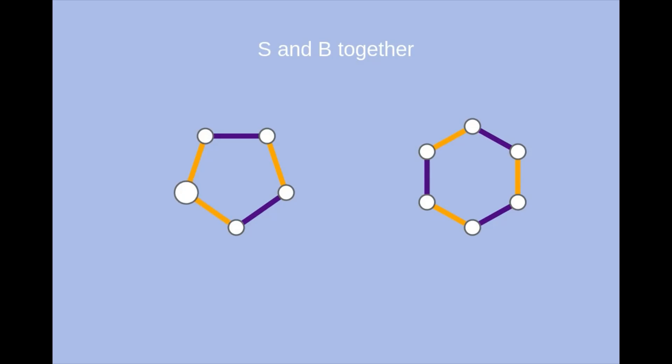then if you color it orange, this vertex is in two pairs at once according to the s matching, and if you color it blue, this vertex is in two pairs at once according to the b matching.